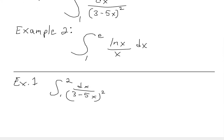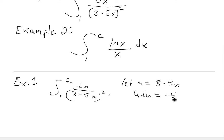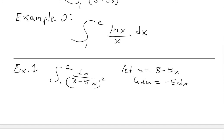The simplest substitution we could do is let u equal the most complicated part inside the bracket, which is three minus five x. Now if we take the derivative, we get du equal to negative five dx. Writing this in terms of dx, we get dx equals du divided by negative five.